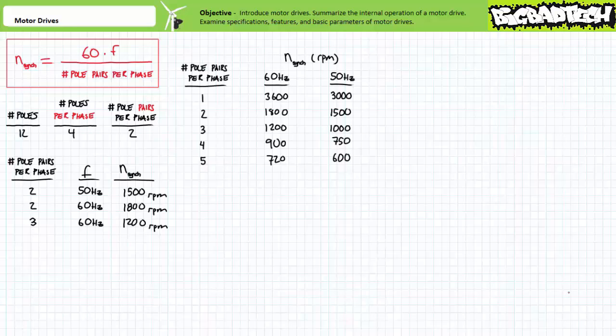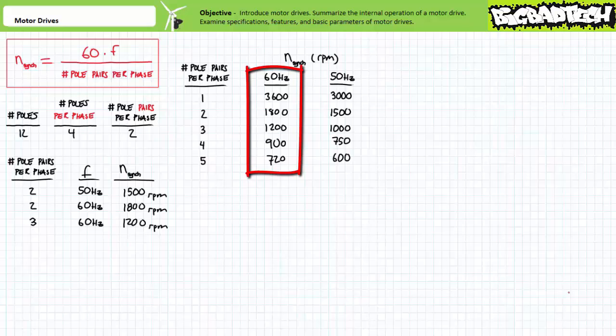Given most distribution systems operate at fixed frequency — 60 Hz being the US standard and 50 Hz being the EU standard — this leads to quantum levels of synchronous speed. In the US, it is common to experience motors with a synchronous speed of 3600, 1800, 1200, 900, 720 RPM, and so on — all these speeds being a result of the number of pole pairs per phase since frequency is fixed.